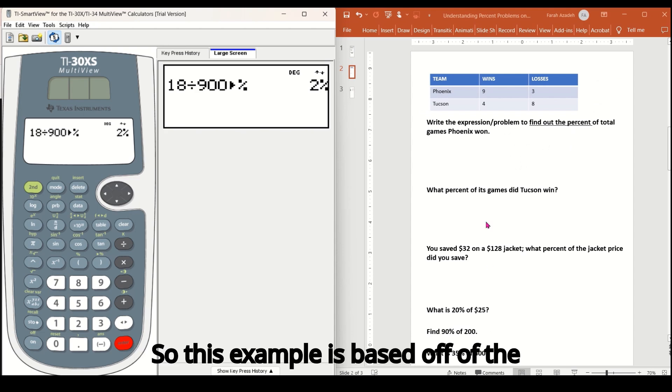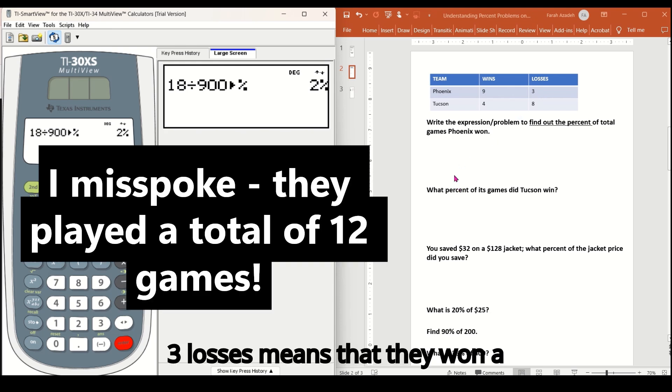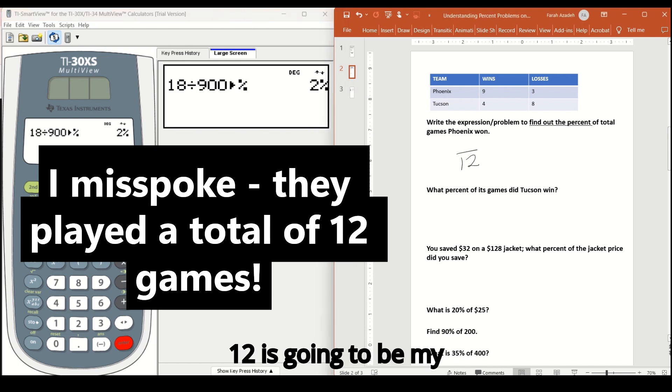So this example is based off of the table. We have two teams, Phoenix and Tucson, and their wins and losses. So the first problem says, write the expression or problem to find out the percent of total games Phoenix won. Well, I have to do some addition because I need to figure out the total games Phoenix won. Nine wins, three losses means that they won a total of 12 games. So 12 is going to be my whole or my base. It's going to be the bottom number of that fraction. And we want to know the percent of the wins. So Phoenix won nine.